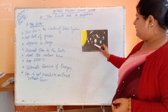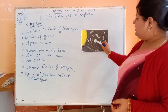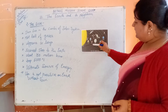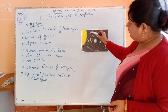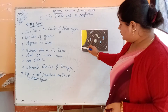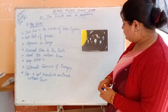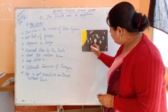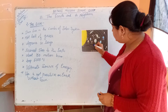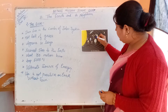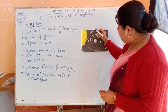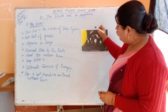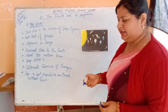Then you can see Jupiter — Jupiter is the biggest planet and it is revolving around the sun on its own individual orbit. You can see here, this is the orbit of Jupiter, and it revolves on its own orbit.